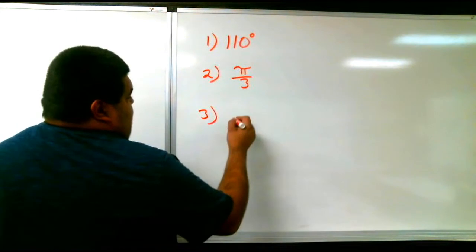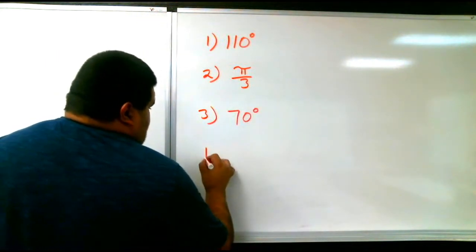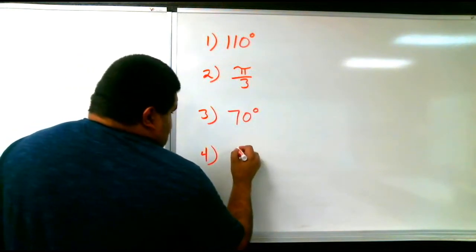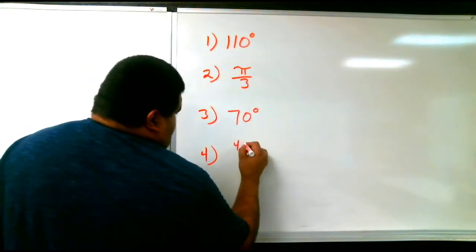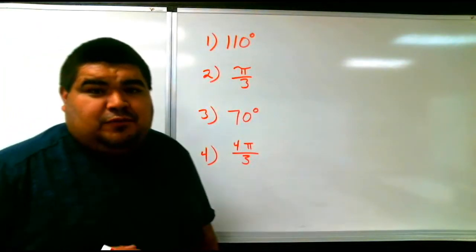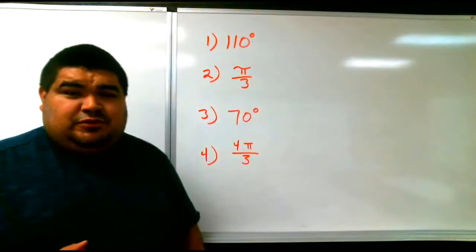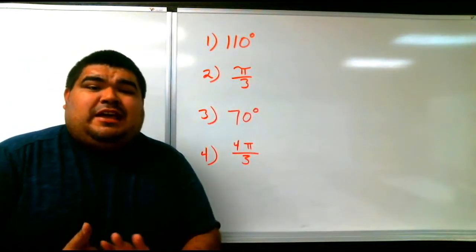Number 3, 70 degrees. And the final one would be 4 pi over 3. So you have two radian and two degree. For the radian ones, you might need to look into your unit circle to know what degree is that.